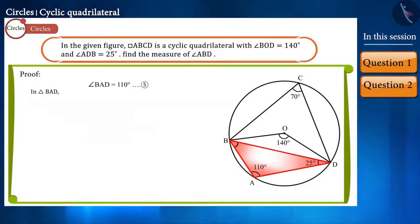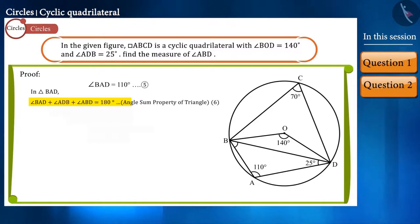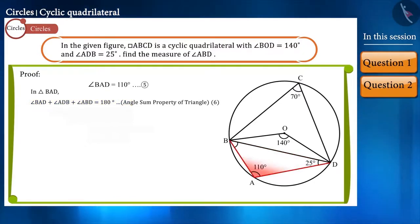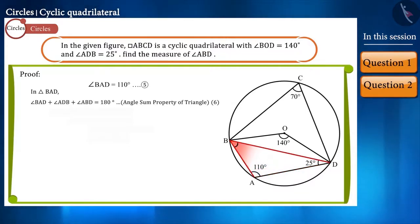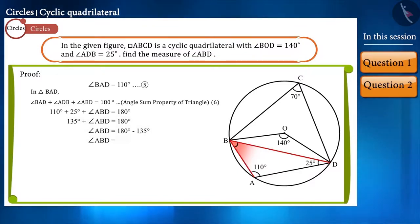By substituting the values of angle ADB and angle BAD into this equation, we can find the value of angle ABD. We get angle ABD measuring 45 degrees.